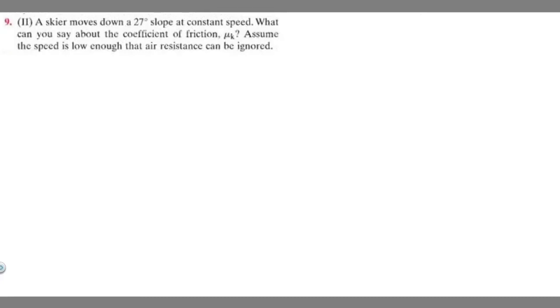In this problem, we're told a skier moves down a 27-degree slope at a constant speed. What can you say about the coefficient of friction mu sub k? Assume the speed is low enough that air resistance can be ignored.